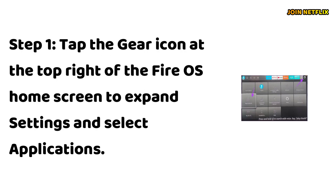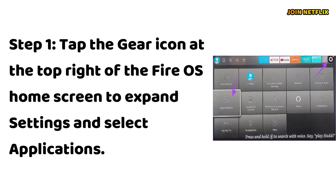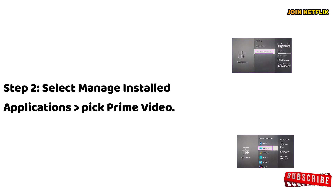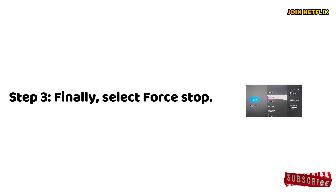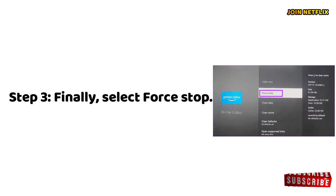Force Stop Prime Video and Reopen. Step 1: Tap the gear icon at the top right of the Fire OS home screen to expand Settings and select Applications. Step 2: Select Manage Installed Applications and pick Prime Video. Step 3: Finally, select Force Stop.